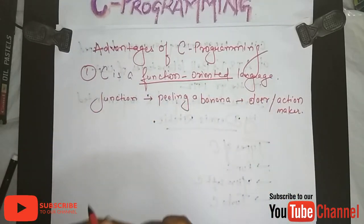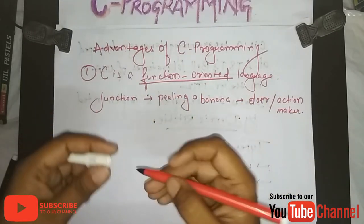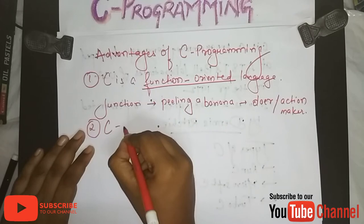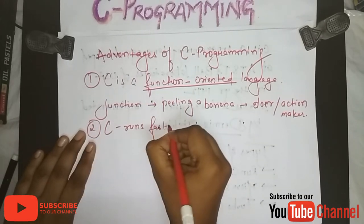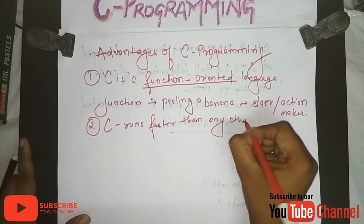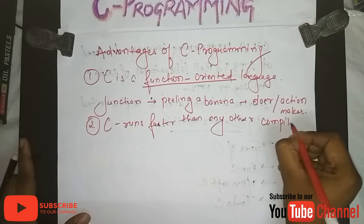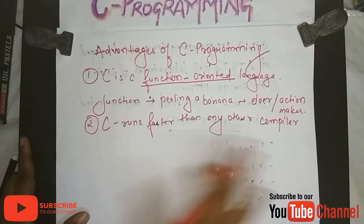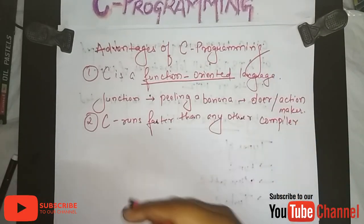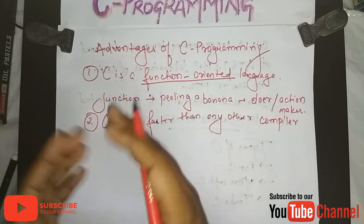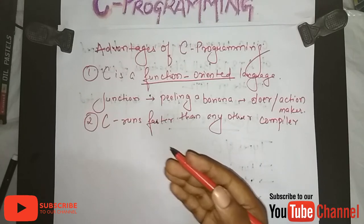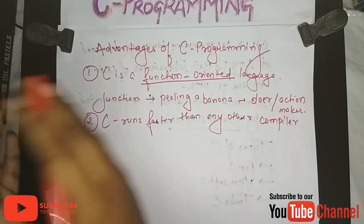The second advantage is C runs faster than any other compiler. The code of C is very simple and understandable by the system very easily, which is why it runs faster. The more instructions the computer can process in less time because it is simple and easy to understand.